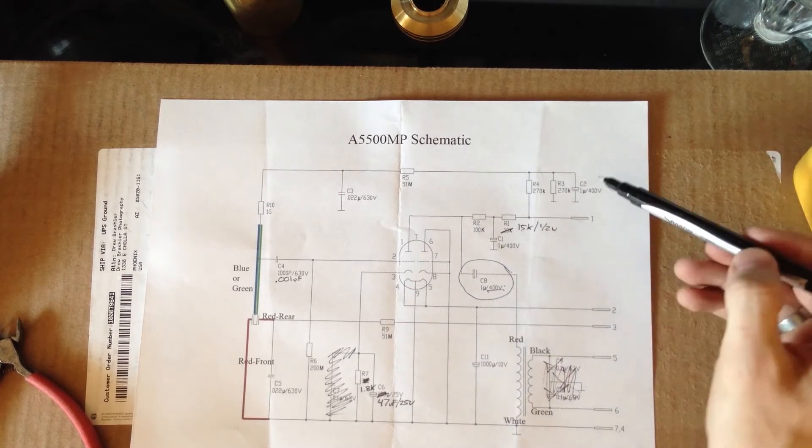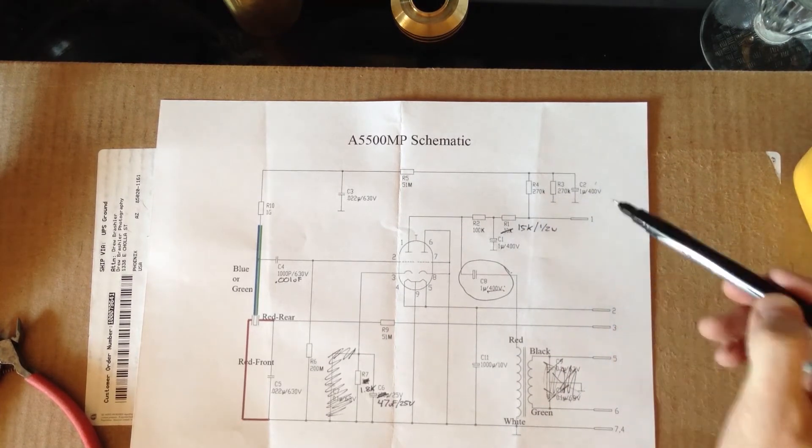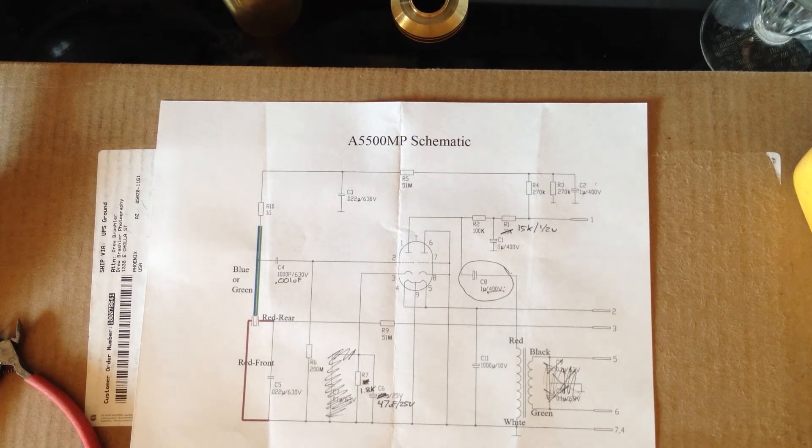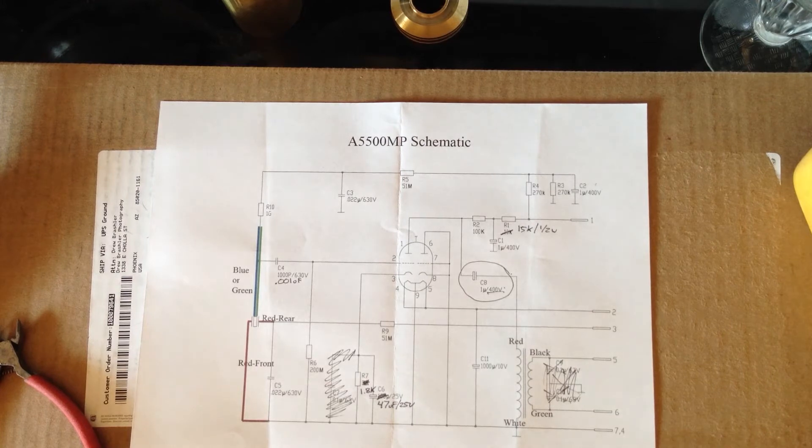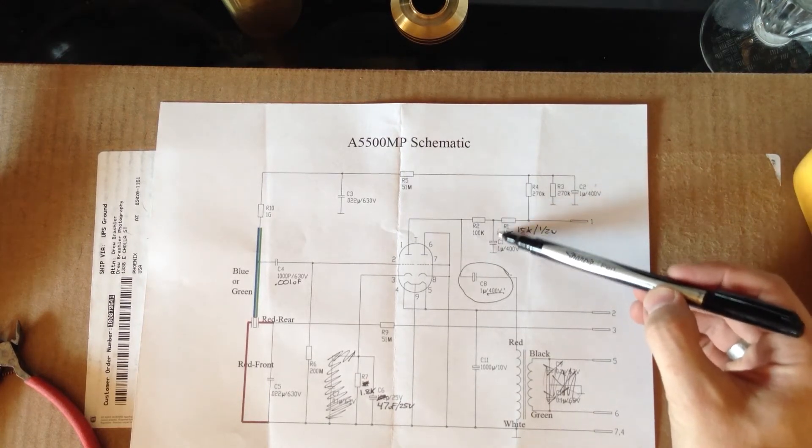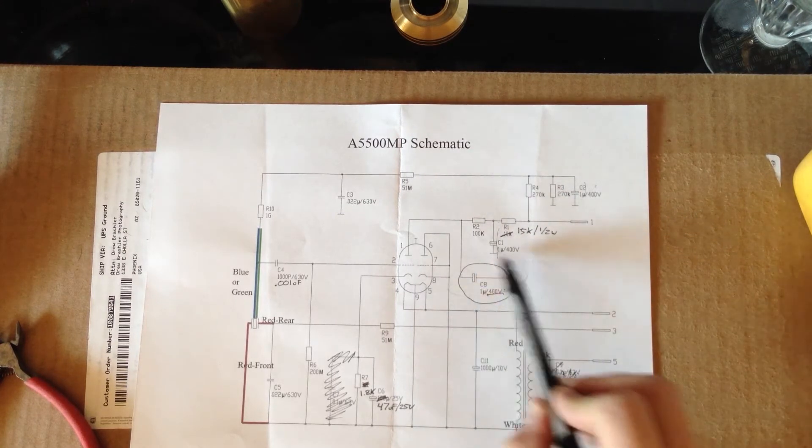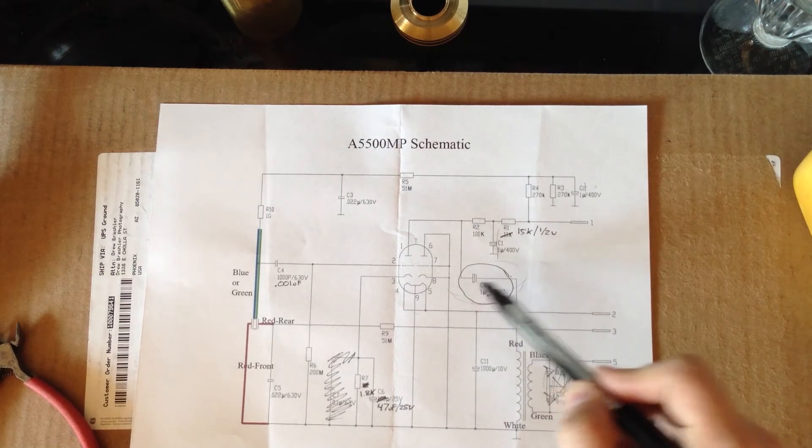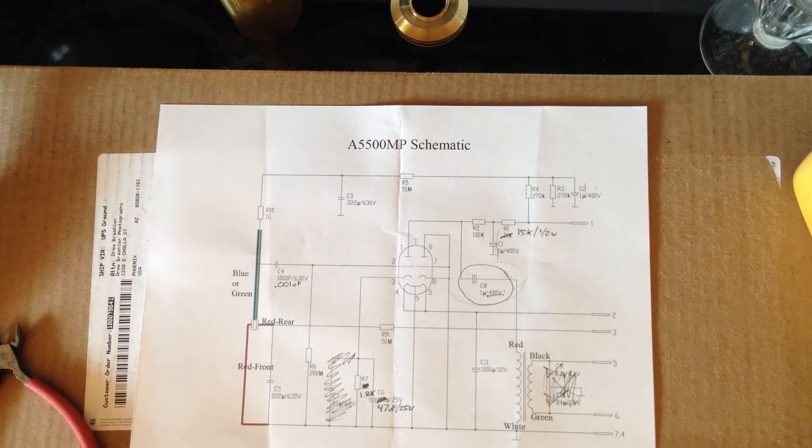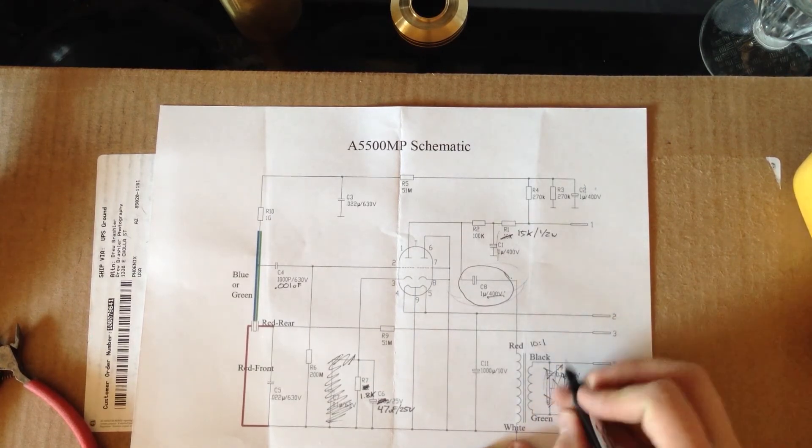The rest of the capacitors, like C2 up here, C1 right here, those are also 1 microfarad 400 volt. But I am doing a good version capacitor, just not the audio quality, because there's not audio actually passing through these capacitors. These are just referencing things to ground. Whereas this is the output of the tube of the microphone and putting it right into the transformer, which is a 10-to-1 transformer.